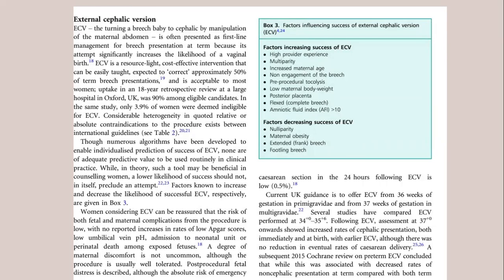When teaching your junior, always emphasize knowing limitations and when to call for help. ECV should be performed by senior persons, not by the trainee alone. Factors increasing ECV success include experienced skilled operator, multiparity, non-engagement of the breech, pre-procedure tocolysis, low maternal BMI, posterior placenta, complete breech, and AFI more than 10. Factors decreasing success include nulliparity, maternal obesity, extended breech, and footling breech.